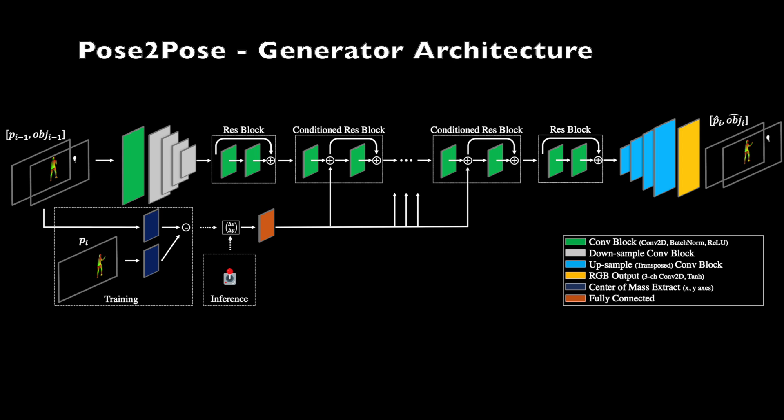We employ two networks. The pose-to-pose network generates a new pose and object pair, given the current one and the control signal. As can be seen, the conditioning signal is injected into the residual blocks at the center of an autoencoder architecture. At training time, the character's motion replaces the control signal. A handheld object can be generated as well. In addition to the pose, the network receives an object channel, which is concatenated to the pose channels.